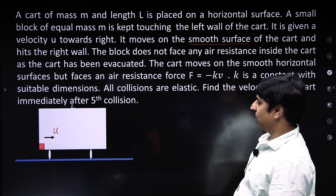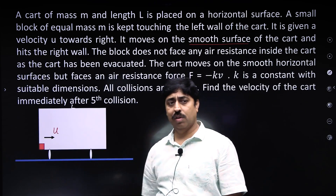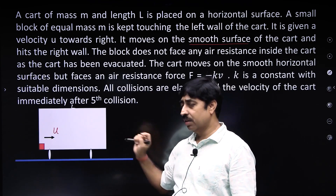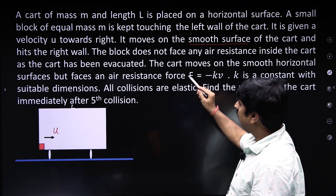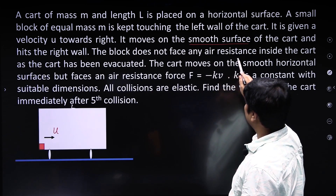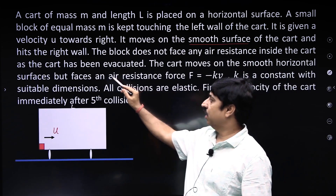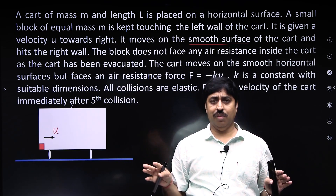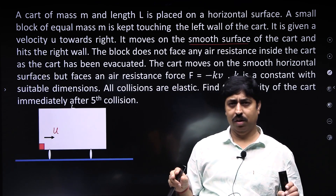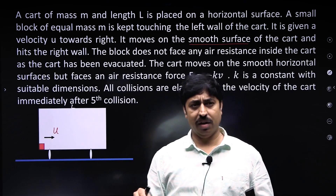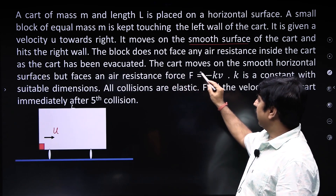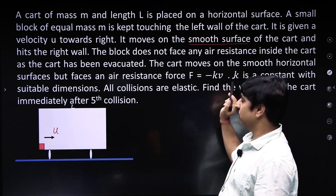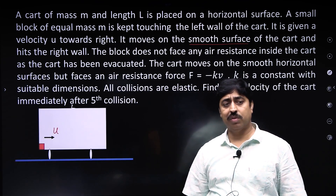The block moves on the smooth surface of the cart and hits the right wall. The surface of the cart on which the block is moving is smooth, so the block does not face any air resistance inside the cart as the cart has been evacuated. There is no air inside the cart. The cart moves on the smooth horizontal surface but faces an air resistance force which is proportional to its velocity.